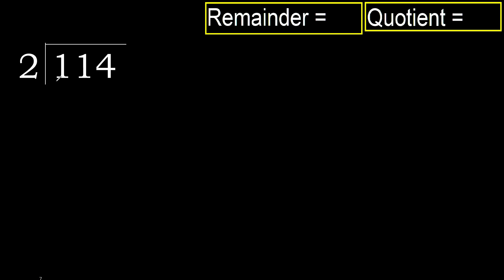114 divided by 2. 1 is less, therefore next. 11 is not less, therefore with 11: 2 multiplied by which number is nearest to 11 but not greater? 2 multiplied by 6 is 12.